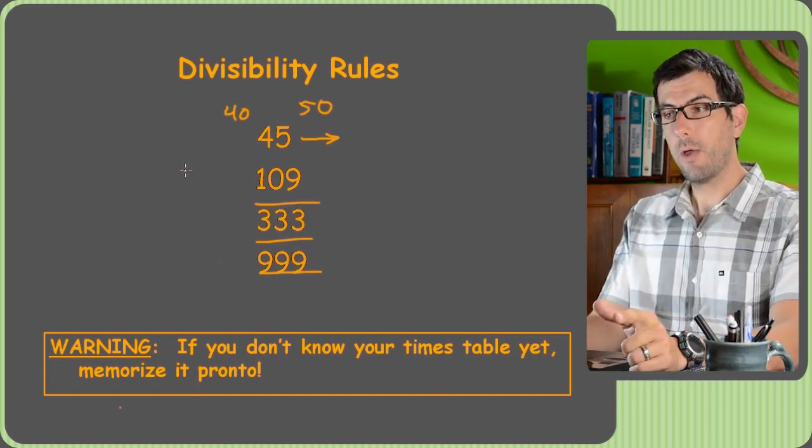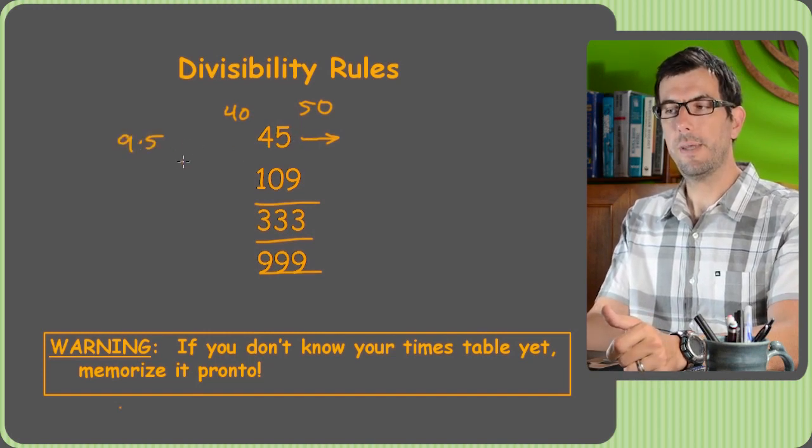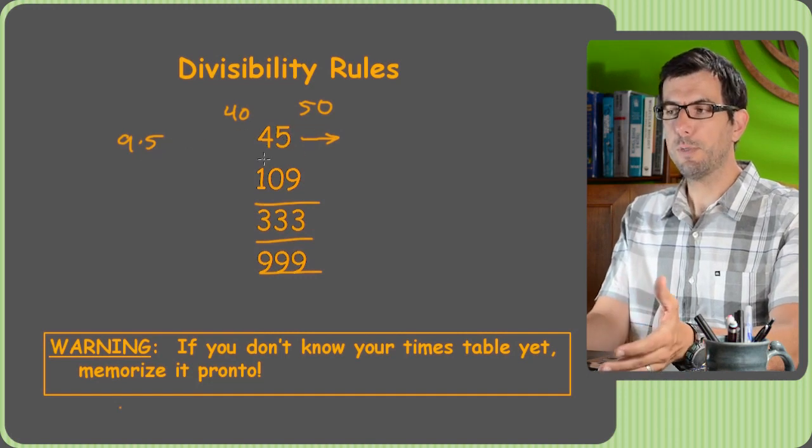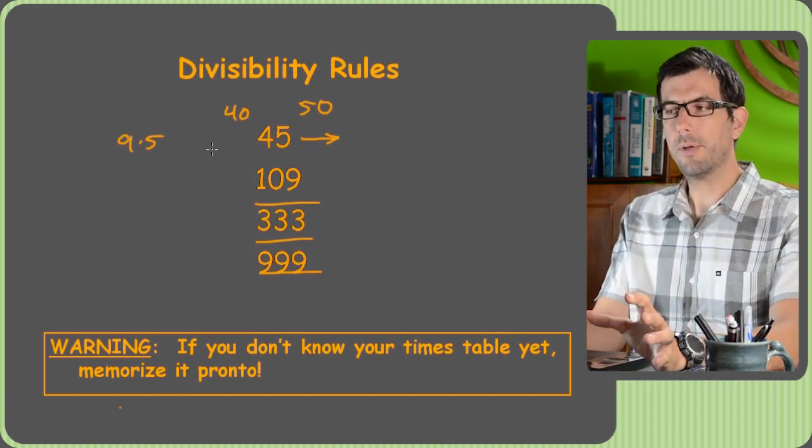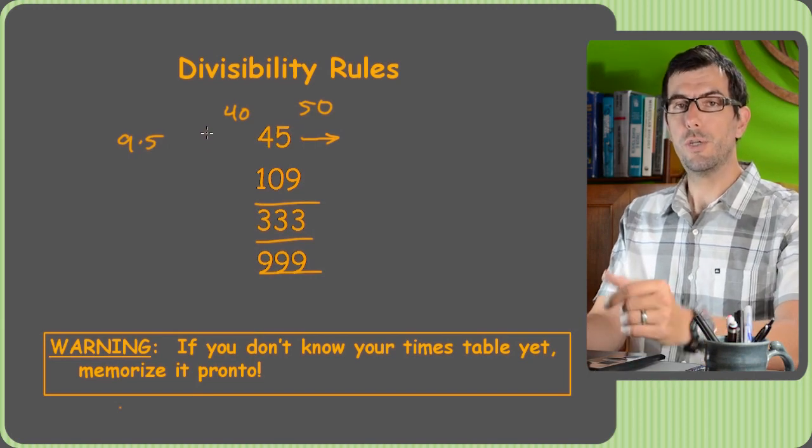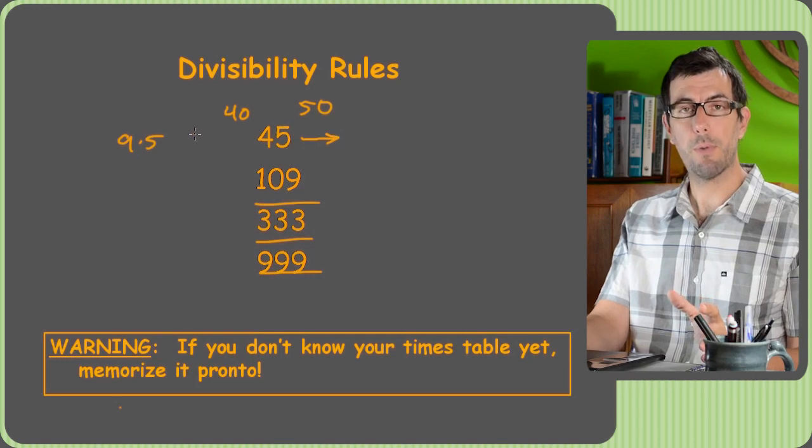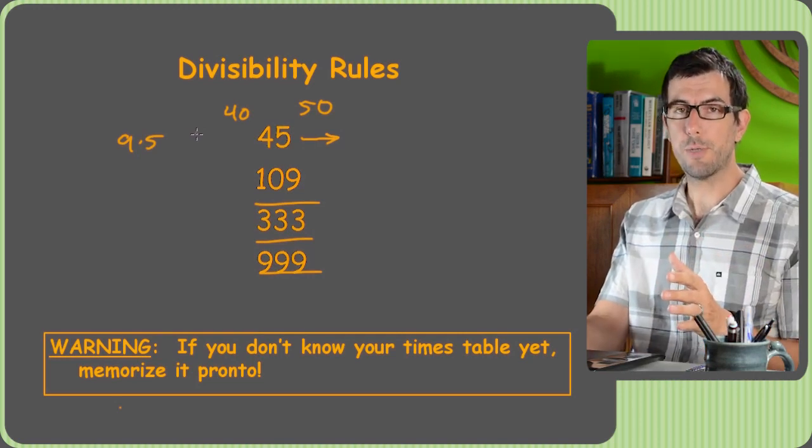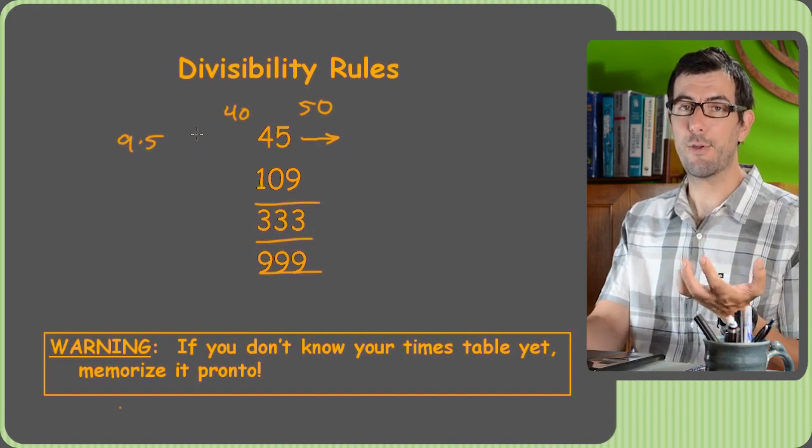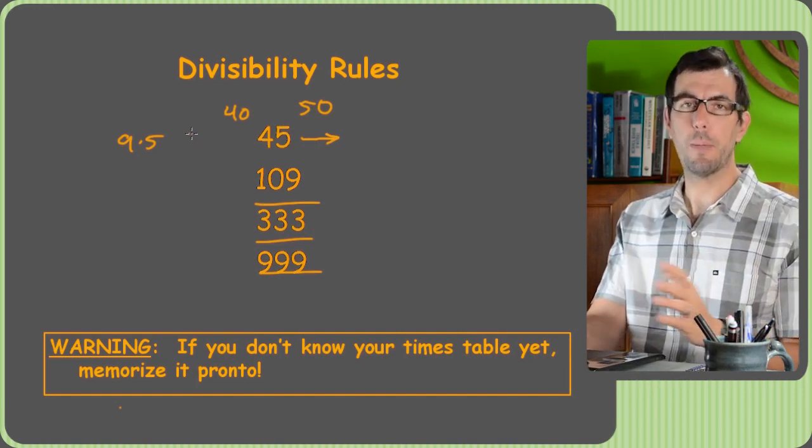But for smaller numbers, like 45, I should know right off the top of my head that that's 9 times 5. And I should know that it's not divisible by 10, right? Because that's not on the times tables. Most of the smaller numbers, anything less than 50 for sure, you should know off the top of your head because you've memorized your times tables. Now if you haven't memorized your times tables yet, if you're still counting on your fingers, even if you're in pre-algebra, it's time to stop counting on your fingers. And I know that's a big deal, and I know it's kind of scary to have to memorize your times tables.